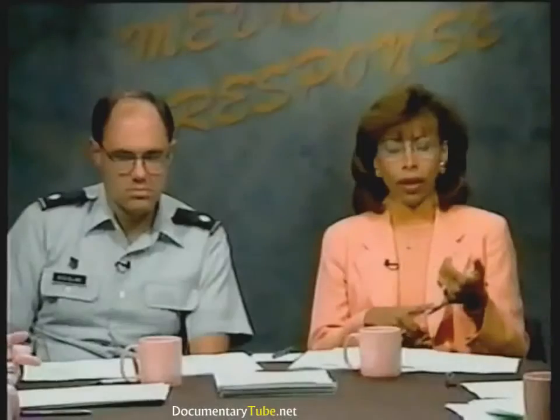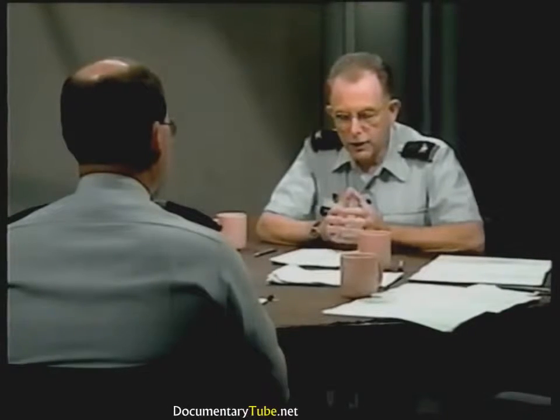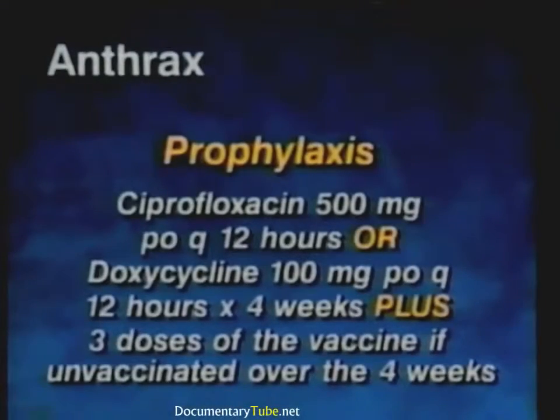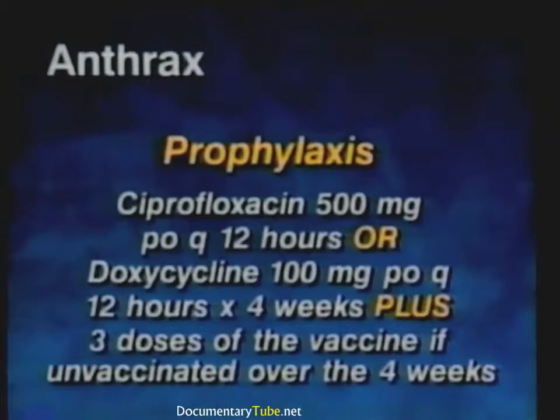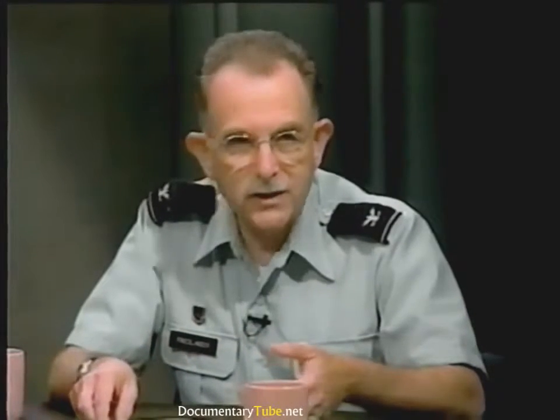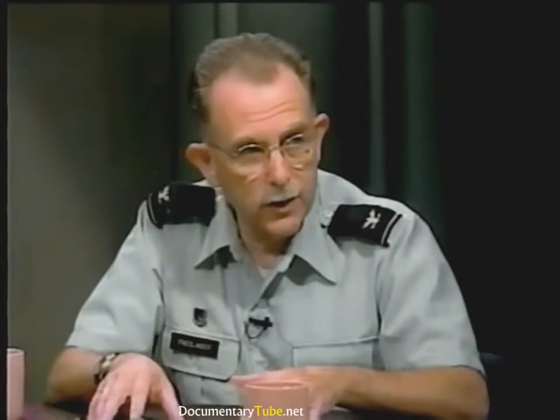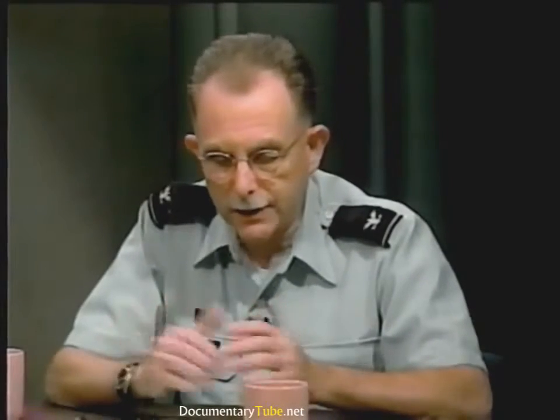What do you do if exposed to aerosolized anthrax? Two approaches are necessary: antibiotic prophylaxis and vaccination. Antibiotics such as ciprofloxacin or doxycycline should be given for four weeks, along with three doses of vaccine over a four-week period. This is because spores can persist in the body for a prolonged period. If vaccine is not available, antibiotics should be prolonged to about 60 days.